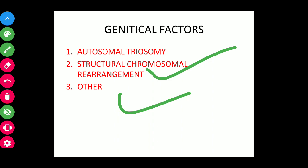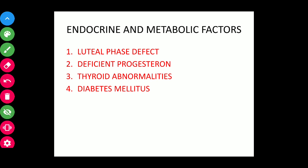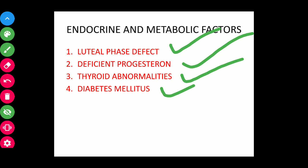Next, endocrine and metabolic factors include luteal phase defect, deficient progesterone, thyroid abnormalities, and diabetes mellitus. Luteal phase defect results in early miscarriages due to decreased or insufficient progesterone, which causes the uterine lining to stop growing and not develop properly, making it difficult for the fertilized egg to implant on the uterus.